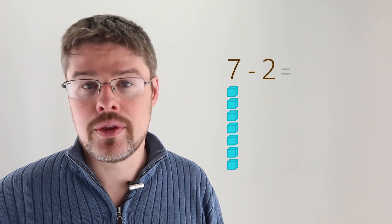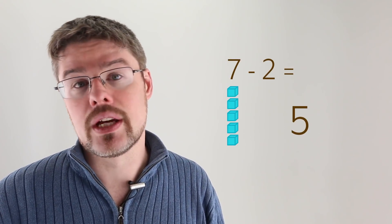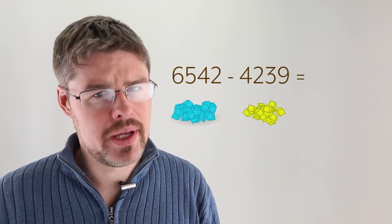If the numbers are small, we can just count. If we have 7 minus 2, that means start at 7 and count down 2, giving us 5. But what if the numbers are big?